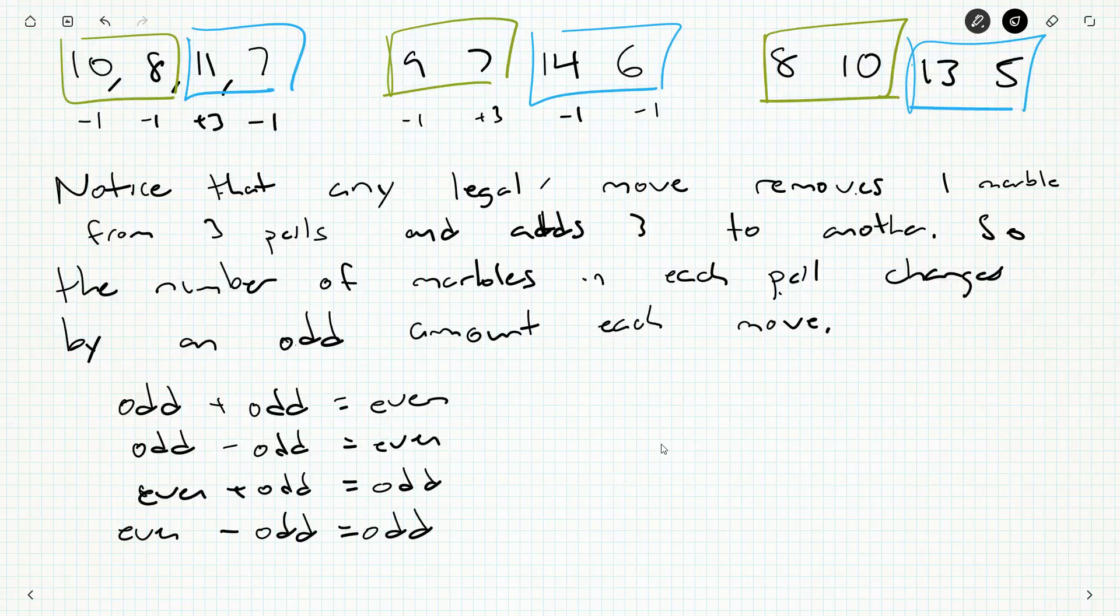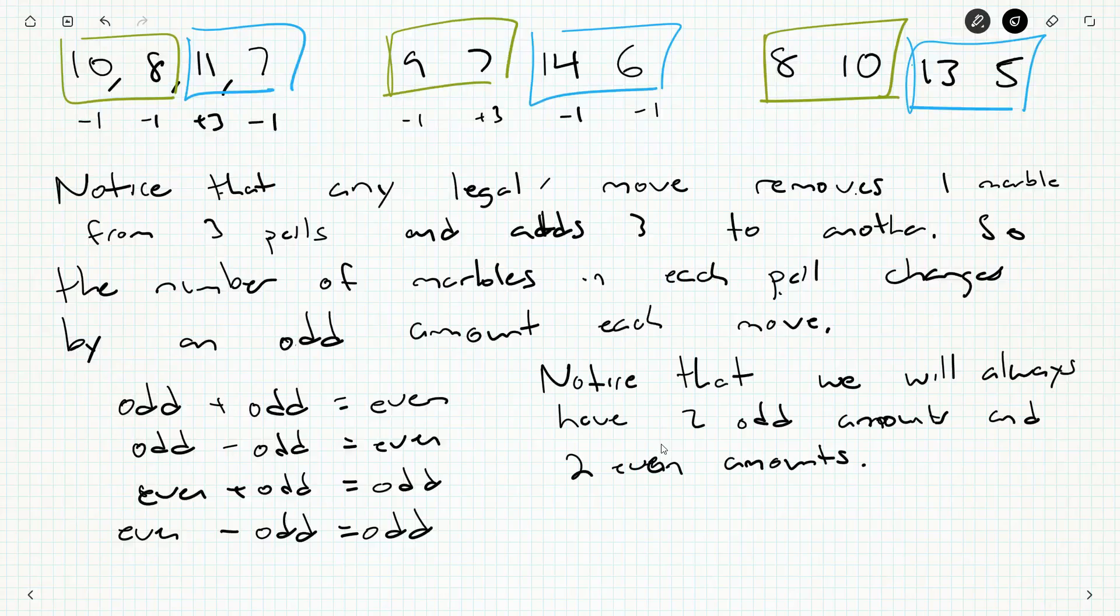So what happens here is these two evens become two odds, become two evens, become two odds, become two evens, become two odds. And these two odds become two evens, become two odds. So we can notice that we will always have two odd amounts and two even amounts.